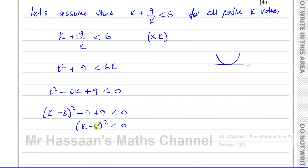This means (k − 3)² < 0 cannot be true, because when you square any number — whether negative, positive, or zero — it will never be less than zero. It will always be zero or positive. So here we have a contradiction.